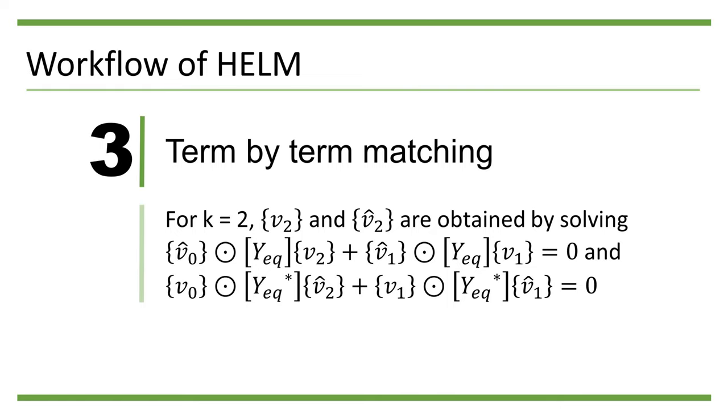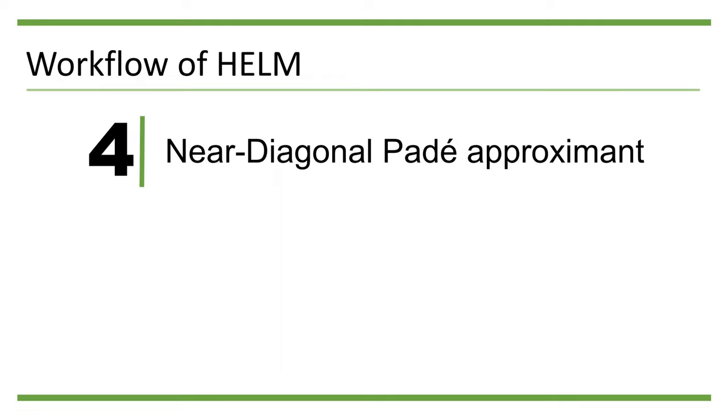and {V0} ⊙ |Yeq|{V̂2} + {V1} ⊙ |Yeq|{V̂1} = 0. Again, V̂0, V0, V1, and V̂1 are all known at this stage. So V2 and V̂2 can be solved directly from these two equations. This process can continue for arbitrarily large k.